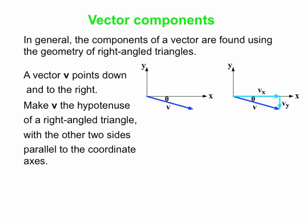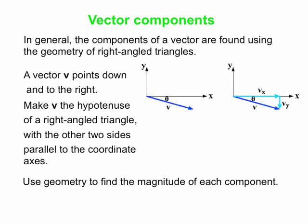Now we want to be quantitative. You make v the hypotenuse and the other two sides parallel to the coordinate axes. We want to know exactly — numerically — how big vx and vy are. We find the magnitudes using trigonometry, then get the sign from the diagram: vx is positive (positive x direction) and vy is negative (negative y direction).